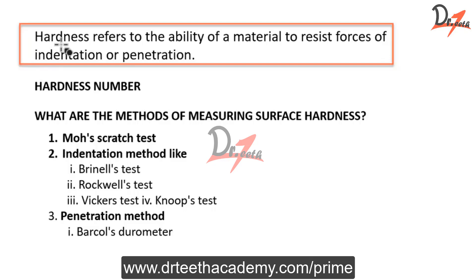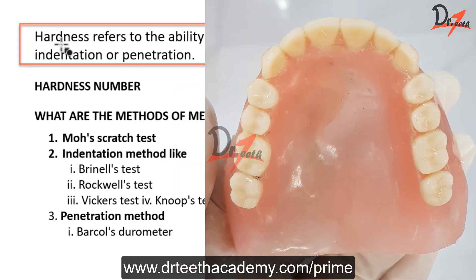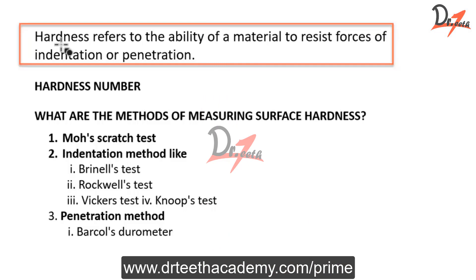So this is one example of why hardness is so important. If you are asked about the clinical significance of hardness, you can give the example of gypsum products, or the example of denture base materials — denture base materials have low abrasion resistance, so we advise the patient not to clean the dentures very aggressively. Also, we need to know the hardness of the restorative material, because if it is too hard, it can wear off the opposite surface — your natural tooth can be damaged.